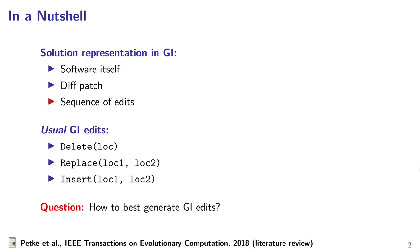Genetic Improvement, or GI, is all about improving existing software. There are many ways to evolve a given software: some approaches evolve it as a whole, some focus on intermediary representations such as dispatches, but nowadays many GI works are based on edit sequences. Edits — most usually deletions, replacements, or insertions of lines of code or statements — are the most common types of edits.